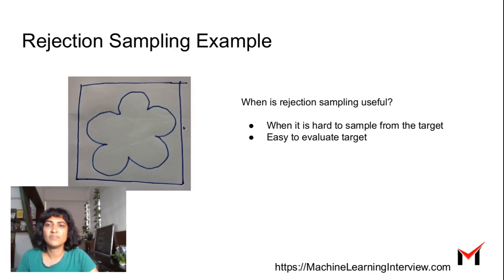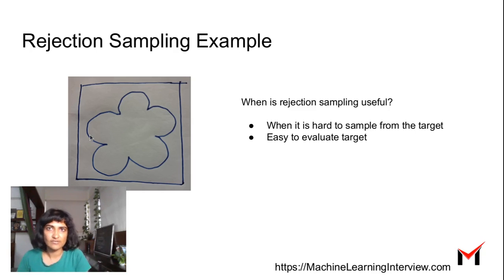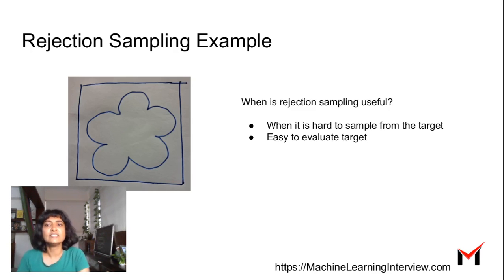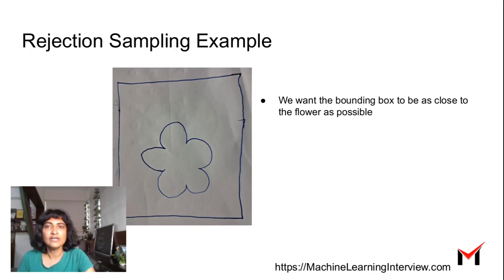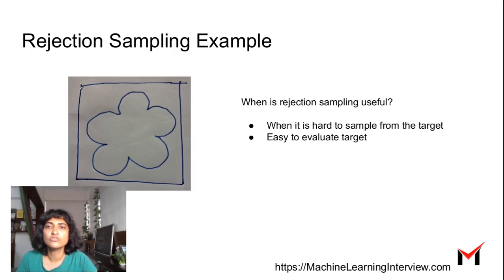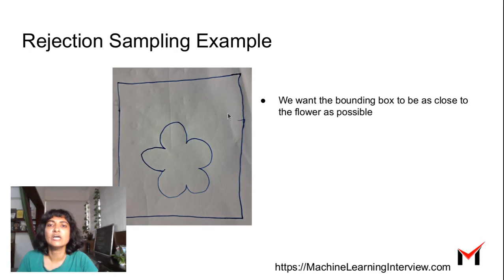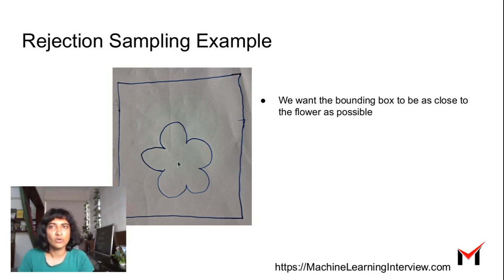Another example is a more complicated shape like a flower. You can sample points in the square and keep the point if it's within the flower, and reject otherwise. Rejection sampling is useful when it's hard to sample from the target distribution but easy to evaluate it — meaning it's easy to determine whether a point is in the flower or not. Also, the bounding box should be as close to the original shape as possible. A very large bounding box means rejecting many more points.